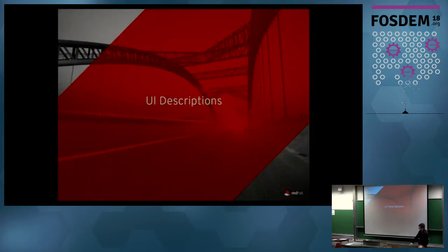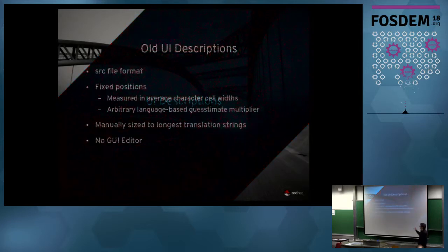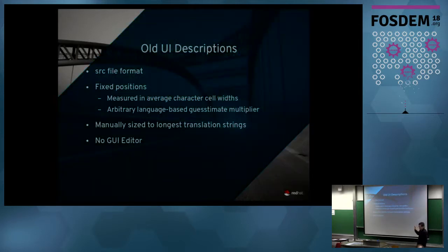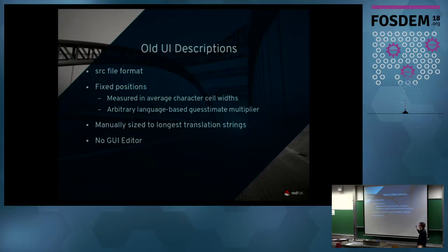Backstory on UI descriptions: all our dialogues used to be described in a .src file format where every widget was a fixed size, measured in arbitrary character cell widths. Under German it would multiply everything by 105% because German text tends to be longer; under Japanese it would divide by some amount because those texts tend to be smaller. There was no GUI editor for this old format.